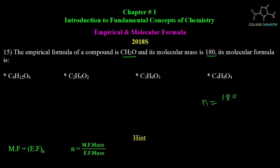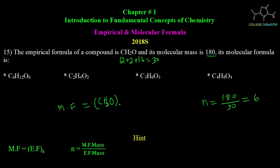The molecular formula mass is 180. The empirical formula mass of CH2O is 30. So n = 180 divided by 30, which equals 6. The molecular formula is CH2O multiplied by n=6, giving C6H12O6. Among the 4 options, C6H12O6 is correct.